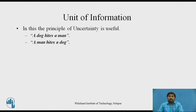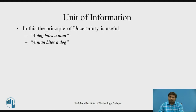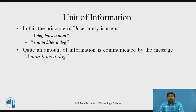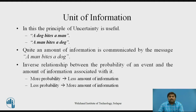Consider two examples. First: 'a dog bites a man' — a common event. The probability of occurrence of this event is more, which gives less information. Second: 'a man bites a dog' — this event occurs rarely, so the probability of occurrence is less. Obviously, the information in this event is more. This demonstrates an inverse relationship between probability of occurrence and the amount of information associated with it: more probability gives less information, and less probability gives more information.